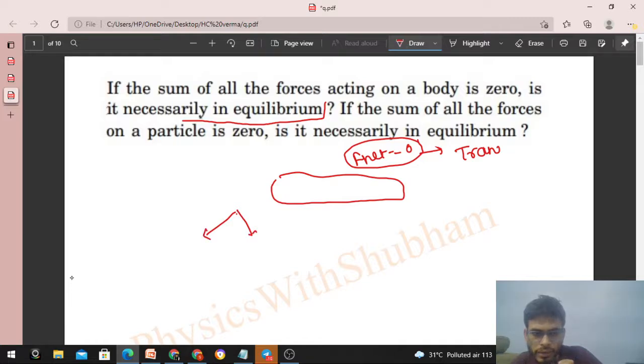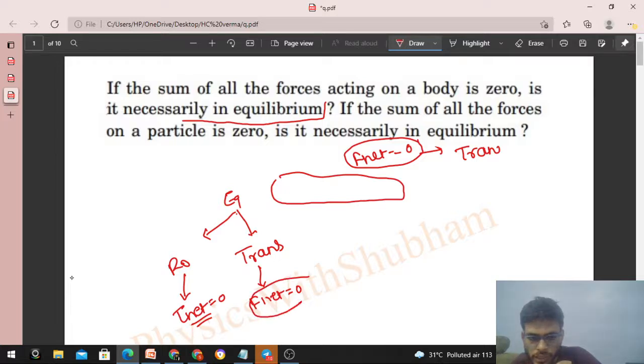See there are two types of equilibrium - rotational equilibrium and translational equilibrium. For translational equilibrium, net force on the body should be equal to zero. And for rotational equilibrium, net torque on the body should be equal to zero. If net force on the body is zero, it means the body will be in translational equilibrium, but we cannot say that body will be in equilibrium because for equilibrium you also need rotational equilibrium.